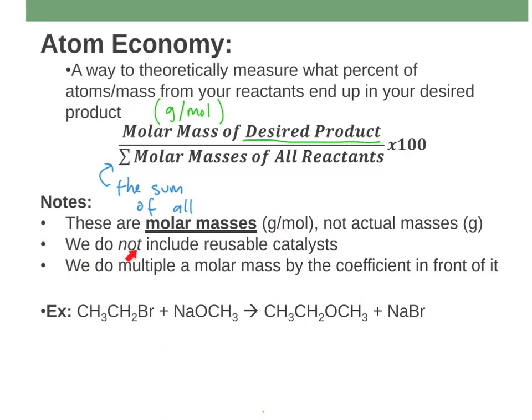For atom economy, we do not include any reusable catalysts. Some things will have 'cat' written next to them for catalyst, or maybe a percentage like '5 mole percent.' We don't include those in the atom economy because they aren't supposed to be wasted — they're reusable. So we ignore those when we do these calculations.